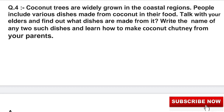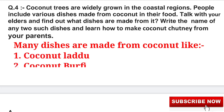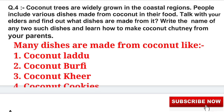Question 4: Coconut trees are widely grown in the coastal regions. People include various dishes made from coconut in their food. Talk with the elders and find out what dishes are made from it. Write the name of any two dishes and learn how to make coconut chutney from your parents. The answer is: many dishes are made from coconut, like coconut ladoo, barfi, kheer, coconut cookies, etc. You can write any two of them.